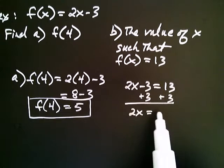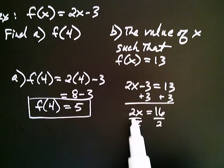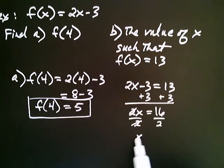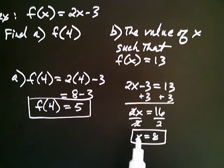So I want to add three to both sides. And I get 2x equals 16. And now I divide both sides by two. And I get x is equal to 8. What's the meaning of this? The meaning is f at 8 is equal to 13.